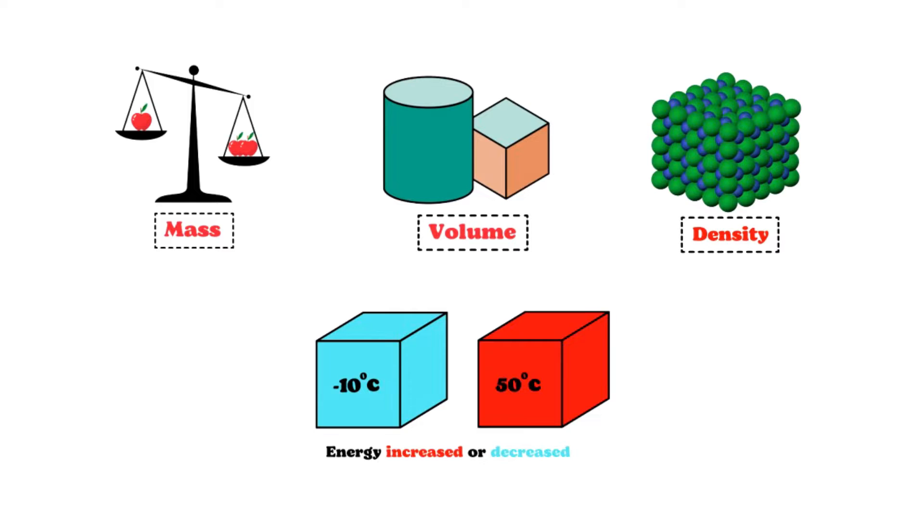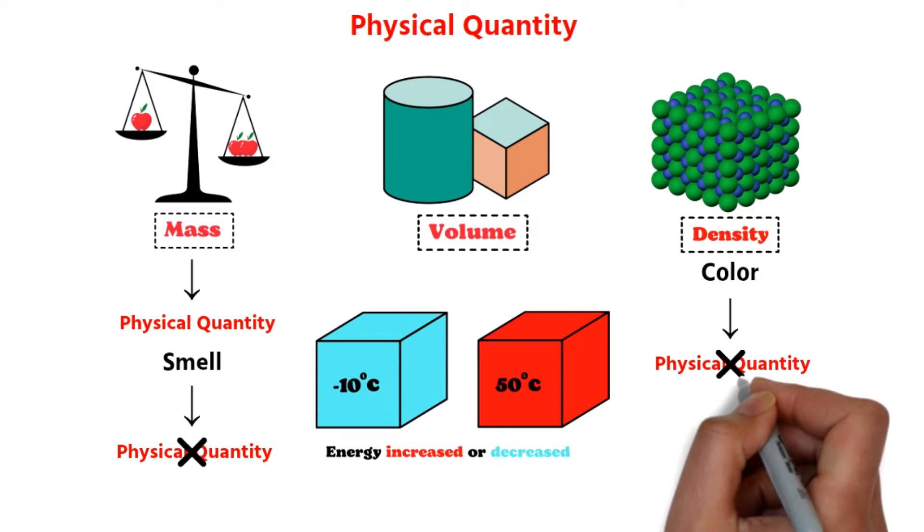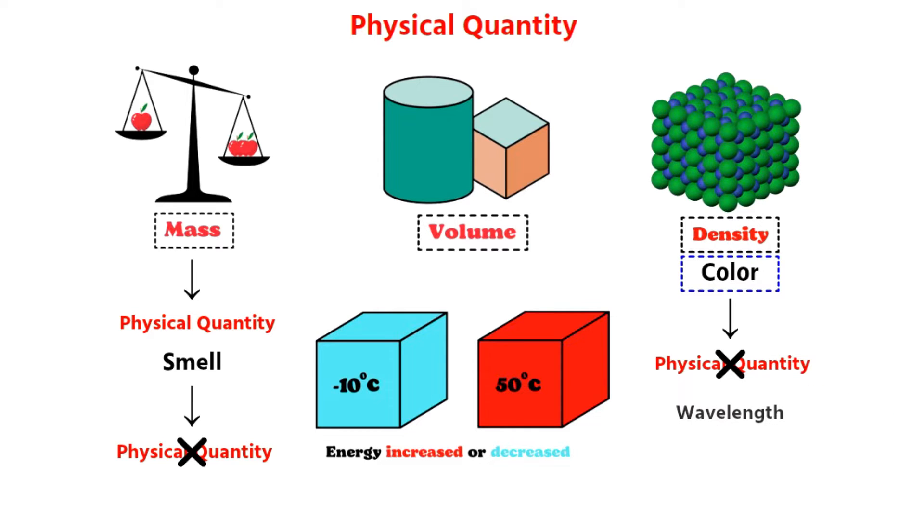Anything that can be measured is called physical quantity. That is, the mass of an object is a physical quantity, but the smell is not a physical quantity. The color of an object is usually not a physical quantity, but the color of light, when expressed as a wavelength, then it is a physical quantity. Similarly, length, area, time, etc. are also physical quantities.